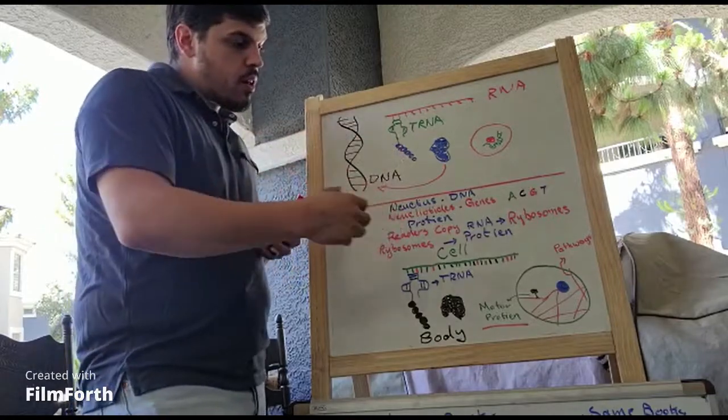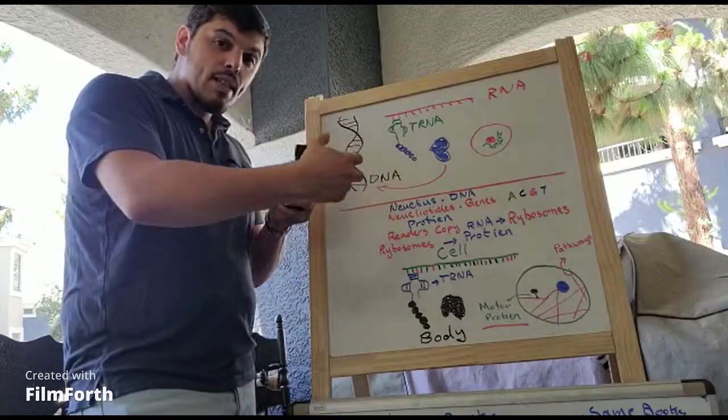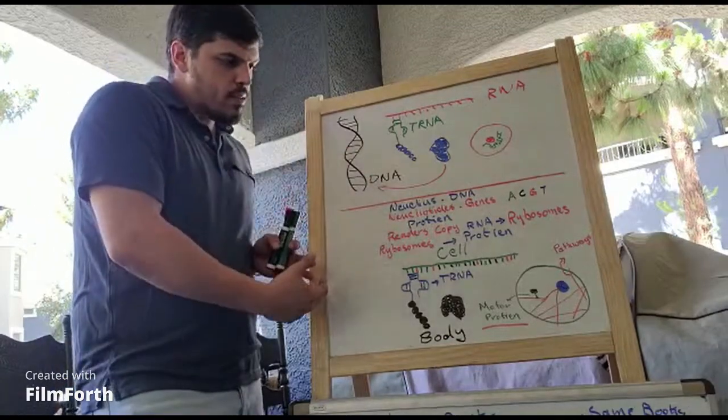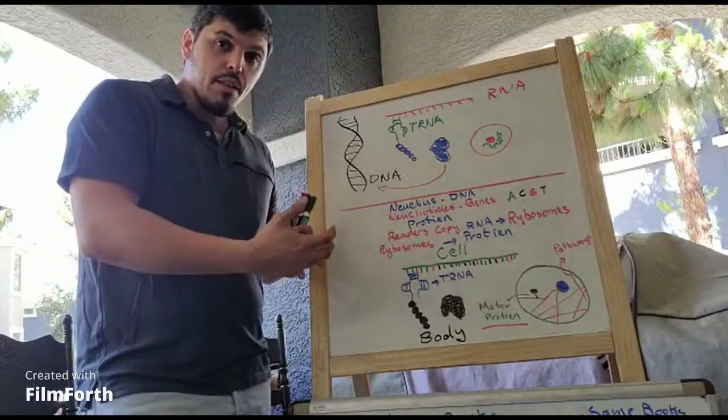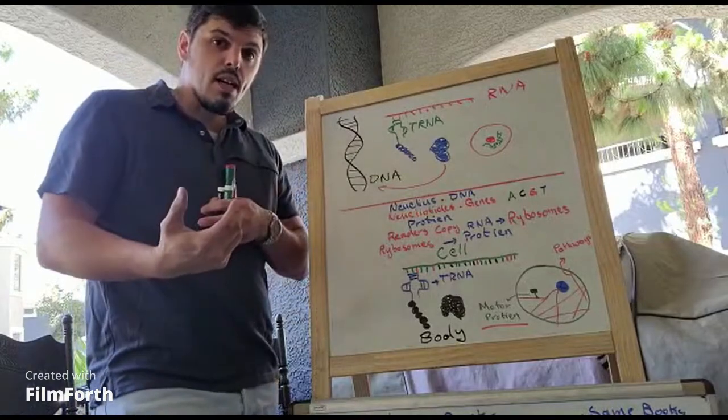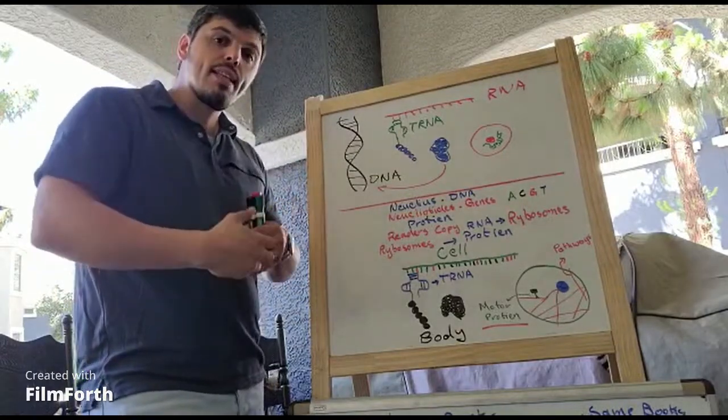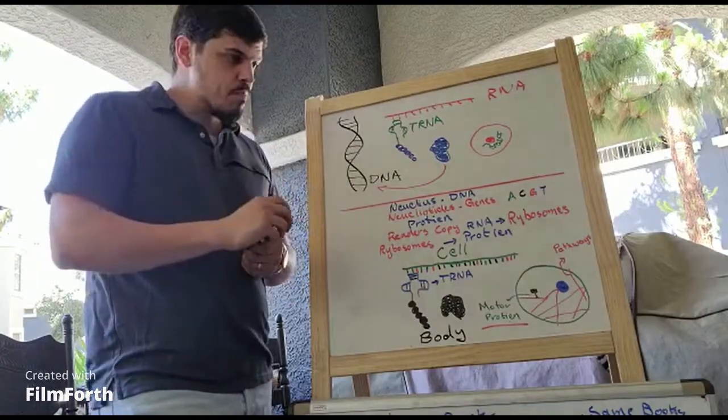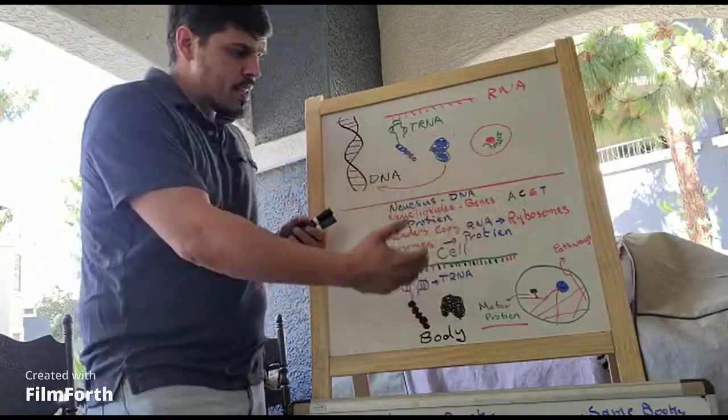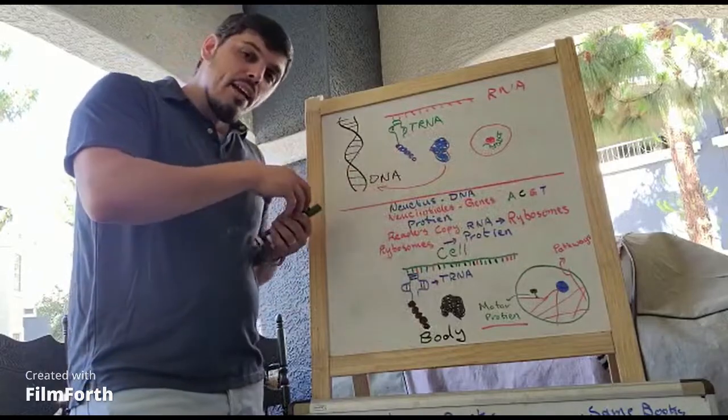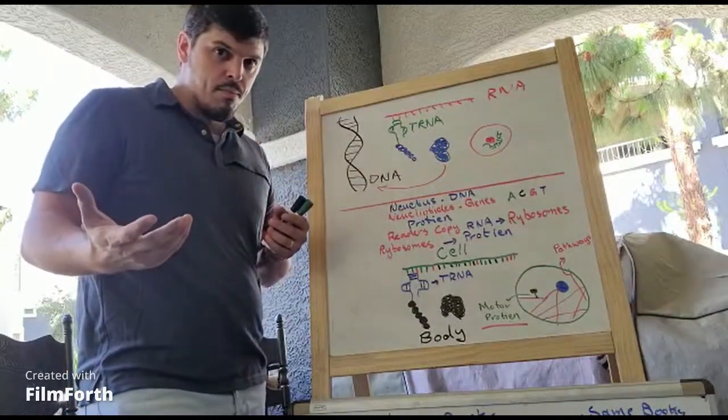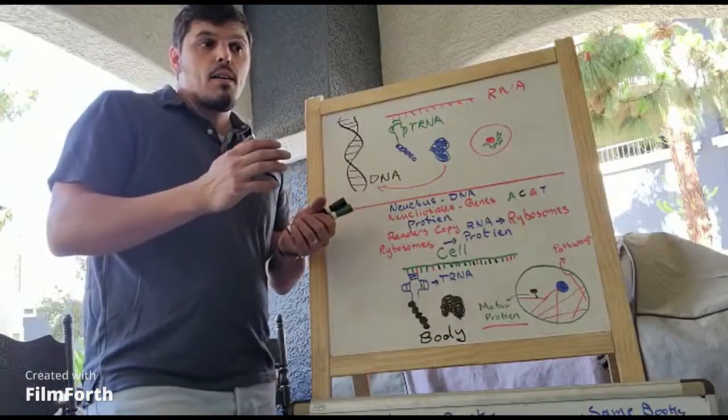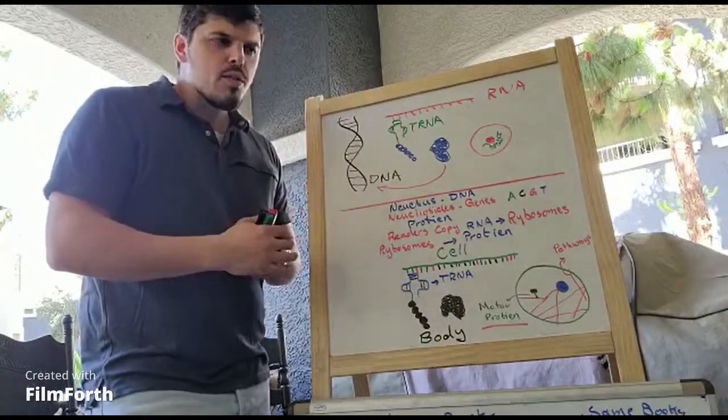Those other workers take that copy, which is now called RNA. That RNA is taken by the workers to the outside. Those workers outside then give them to another protein. That protein is called a ribosome. Those ribosomes then change that information into protein. So, that protein is now, well, there are different types of proteins.